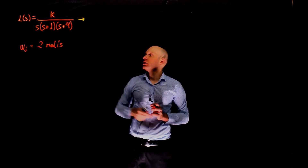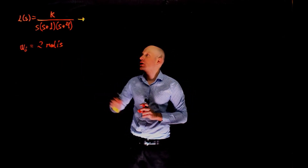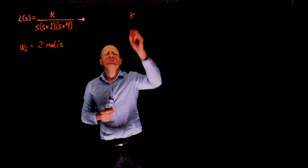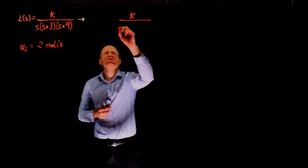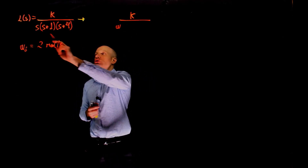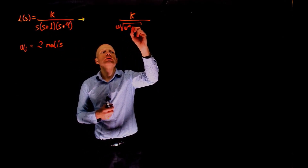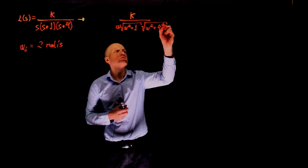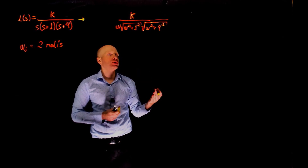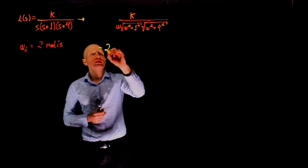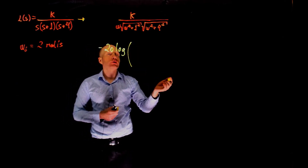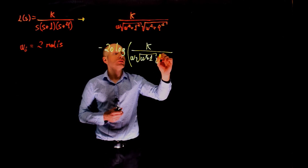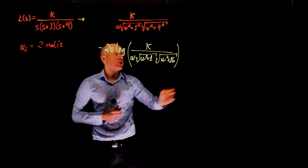Our job is now straightforward. We calculate the magnitude of this transfer function at that particular frequency and equate the gain margin expression to 20 dB to find the value of k. The magnitude of the transfer function is k over omega times square root of (omega squared plus 1) times square root of (omega squared plus 16). The gain margin is negative 20 log of that magnitude, and we want this to equal 20 dB.